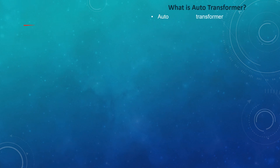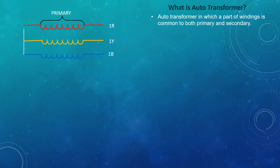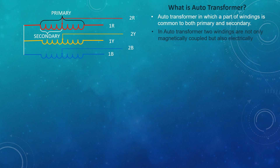What is an auto transformer? An auto transformer is one in which a part of the winding is common to both primary and secondary. In an auto transformer, the two windings are not only magnetically coupled but also electrically connected.